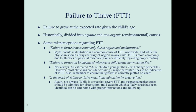Another misperception is that failure to thrive can be diagnosed whenever a child crosses down percentiles. Children generally should not cross percentiles that much, but this isn't always the case. About 25% of children younger than age two will change percentiles. They might be born at the 50th percentile but at age two be at the 35th percentile, and that's normal. Typically children tend to stay around the same percentiles, but about 25% will cross percentiles.